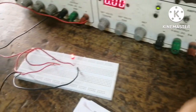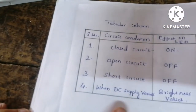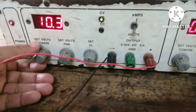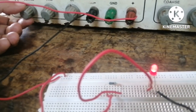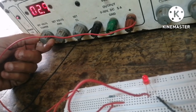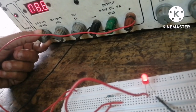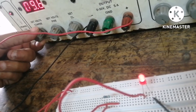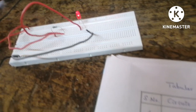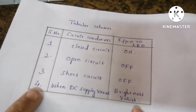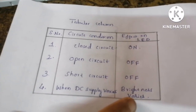The fourth condition is: when the DC power supply varies, what is the effect on the LED? Currently it is 10.3 volts on the power supply. If I vary the power supply — increase or decrease — you can see the brightness of the LED changes. The brightness is reduced when I decrease, and once I increase, the brightness increases again. This is the effect on the LED when we vary the DC power supply. When the voltage gets varied, the intensity or brightness of the LED goes on varying. Serial number four: when DC supply varies, brightness also varies.